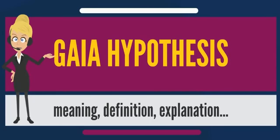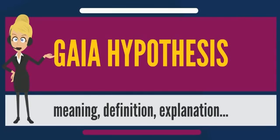Biologists and earth scientists usually review the factors that stabilize the characteristics of a period as an undirected emergent property or entelechy of the system. As each individual species pursues its own self-interest, their combined actions may have counterbalancing effects on environmental change. Opponents of this view sometimes reference examples of events that resulted in dramatic change rather than stable equilibrium, such as the conversion of the earth's atmosphere from a reducing environment to an oxygen-rich one at the end of the Archean and the beginning of the Proterozoic periods.